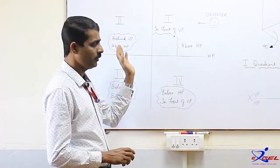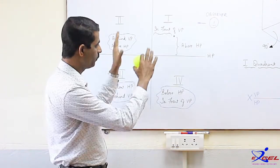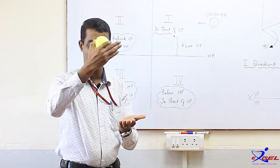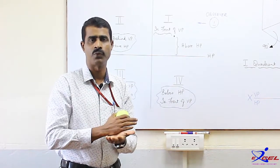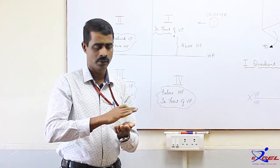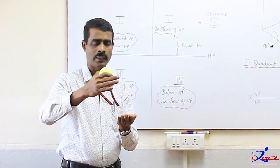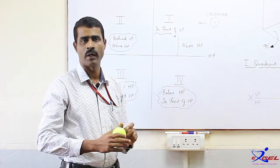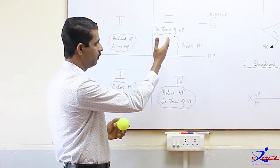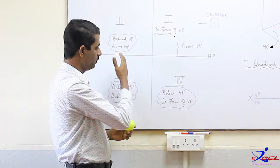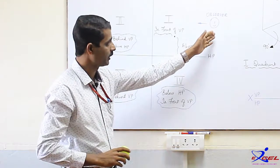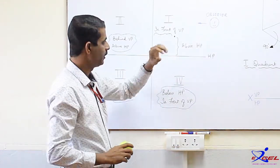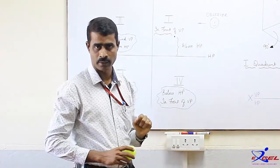What we mean by quadrant is: suppose we have the entire space, if we divide it into equal 4 parts — sectioning it horizontally and sectioning it vertically — we will get 4 quadrants: 1, 2, 3, and 4. Suppose the observer is on the right-hand side. What do we mean by the first quadrant?